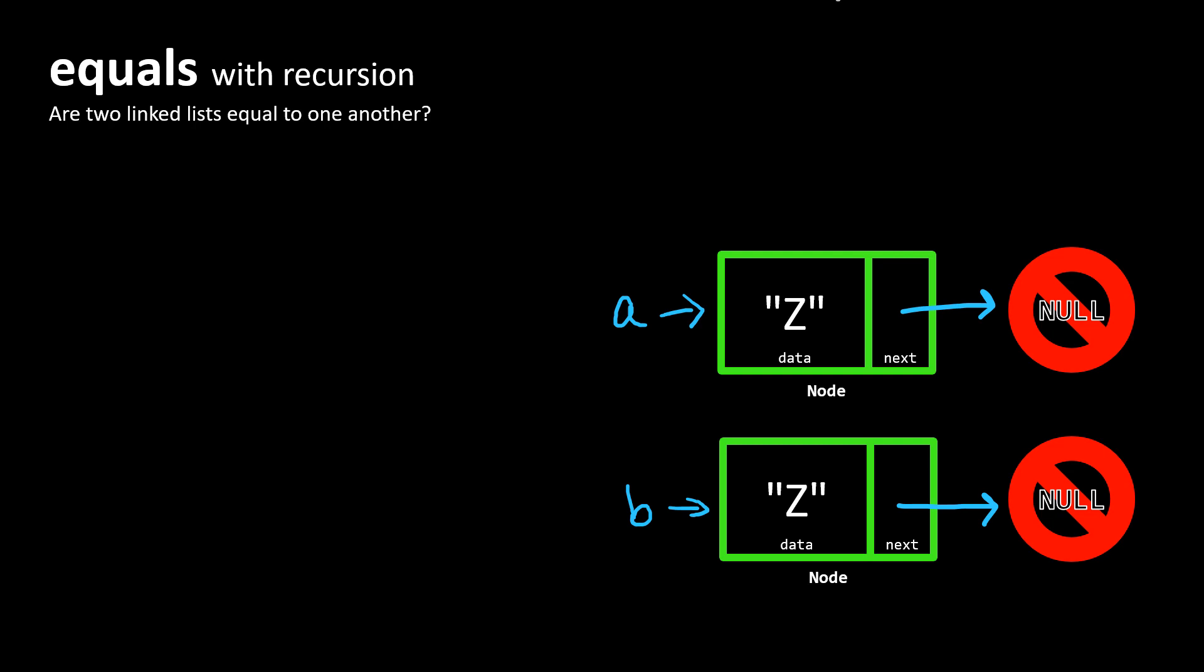How might we determine that two lists are equal to one another using recursion? So imagine these two lists. This is the simplest case we can imagine. We've got two lists, each of them has only a single node in it.